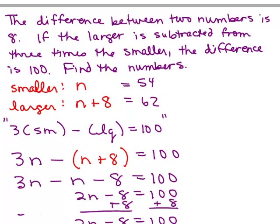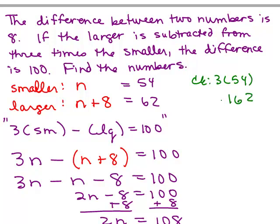Let's see if that makes sense. It says the difference is 8. Yes, you can see that. 62 minus 54 is 8. And it says if the larger is subtracted from 3 times the smaller. Well, let's check that out. We first have to do 3 times the smaller number, which is 162. And then we're going to have to subtract the larger number. First of all, we get 162. We're going to subtract, and we get 100. Yes, it works out.